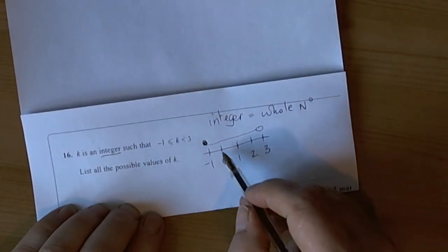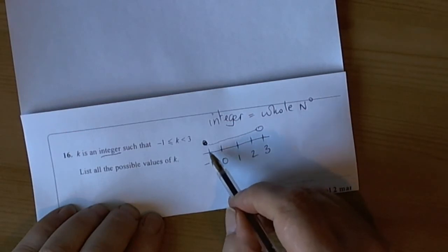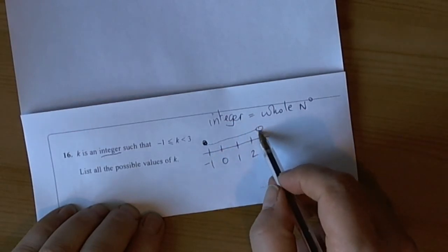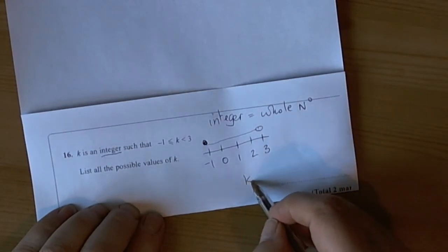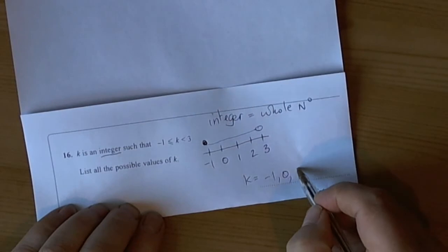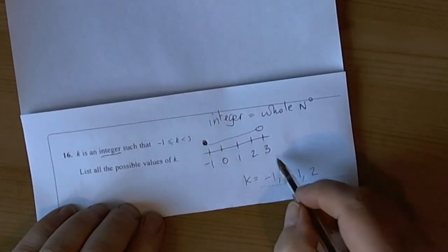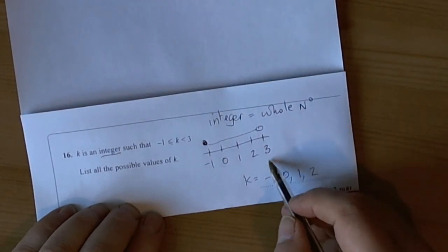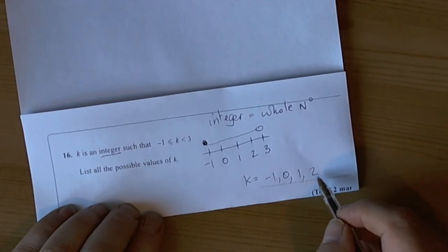And what this is telling us then is that any of the values between here and up to but not including 3 count. So the answer for this is k can be minus 1, 0, 1, or 2. It can't be 3 again because it has to be less than 3 and it has to be integer whole numbers.